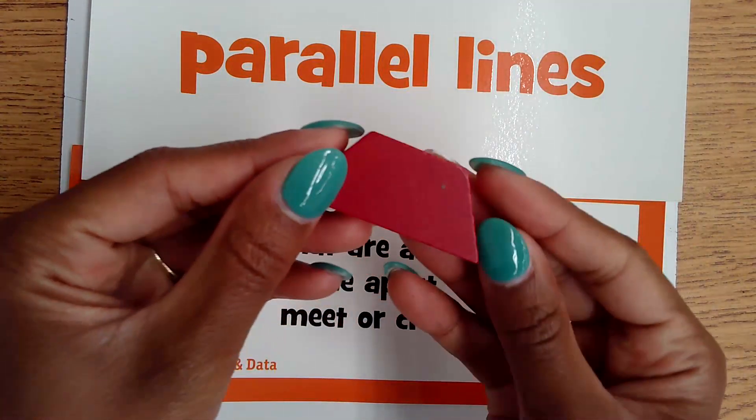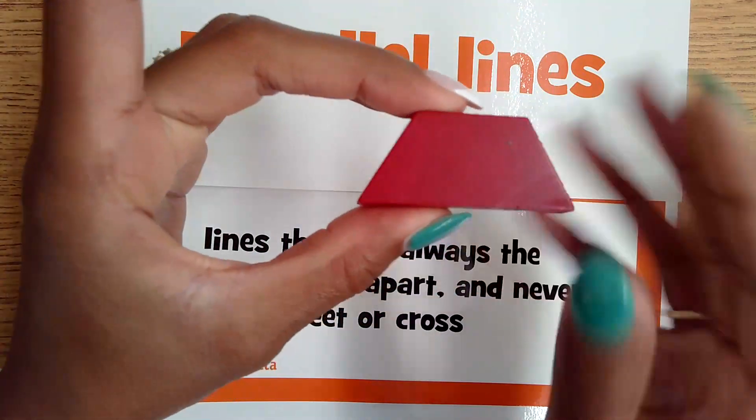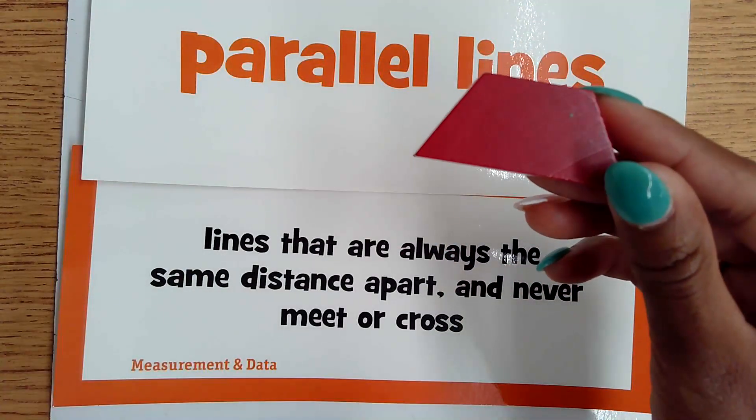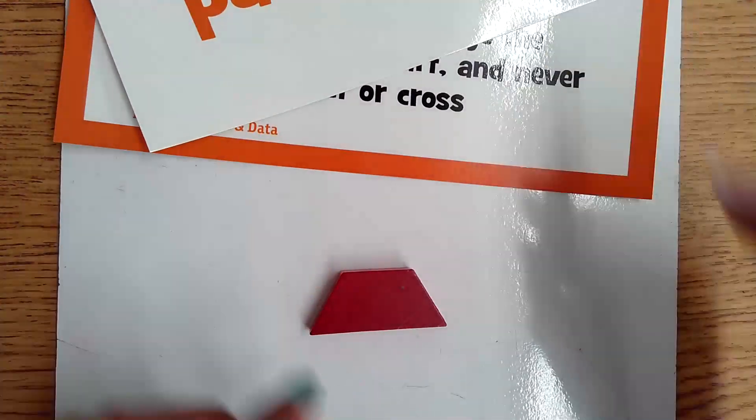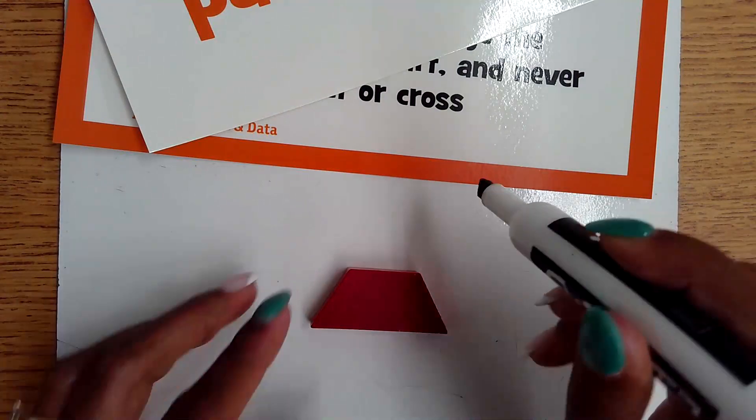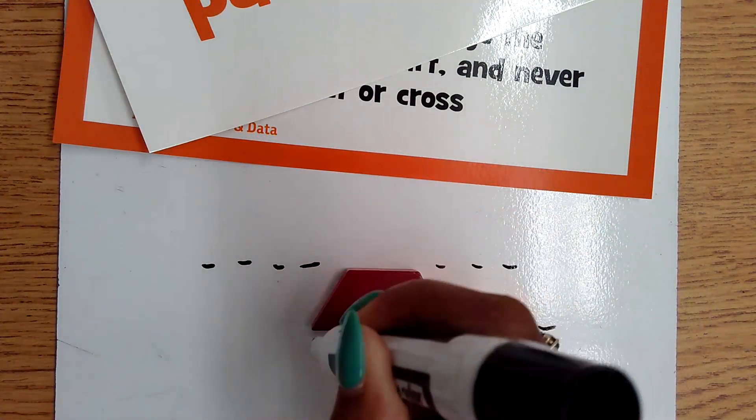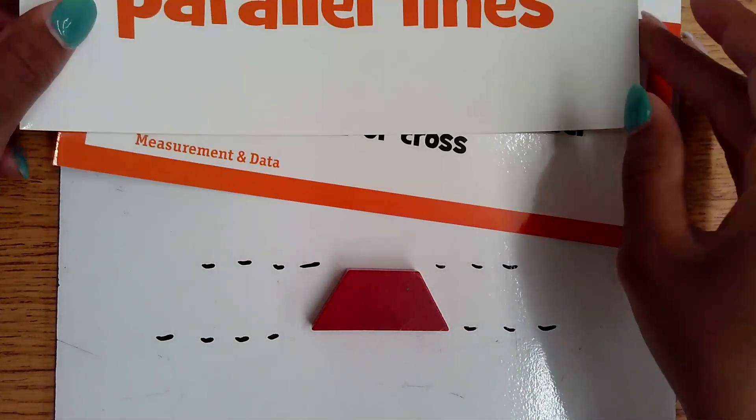If we look at our trapezoid, the lines on the top and the lines on the bottom are the same distance apart, and they will never touch. If they continued to go on forever, they will never intersect or cross. So those are our parallel lines.